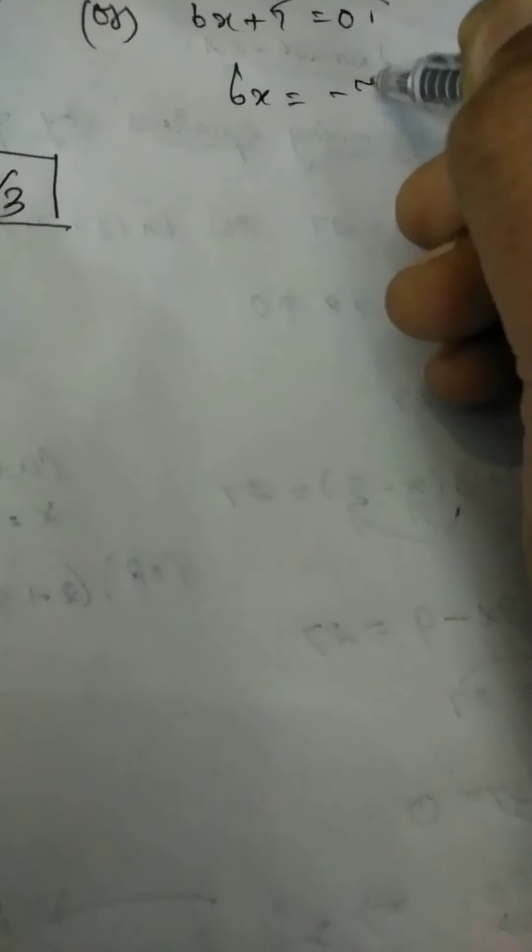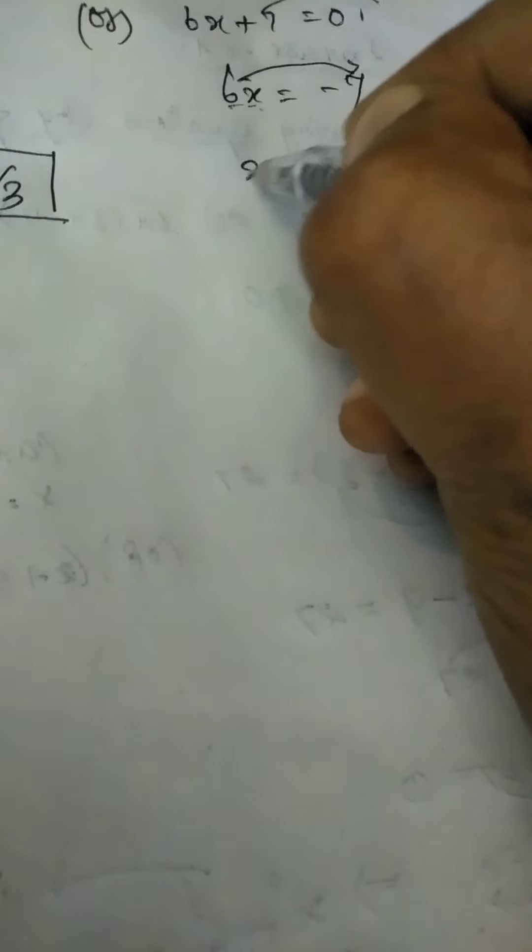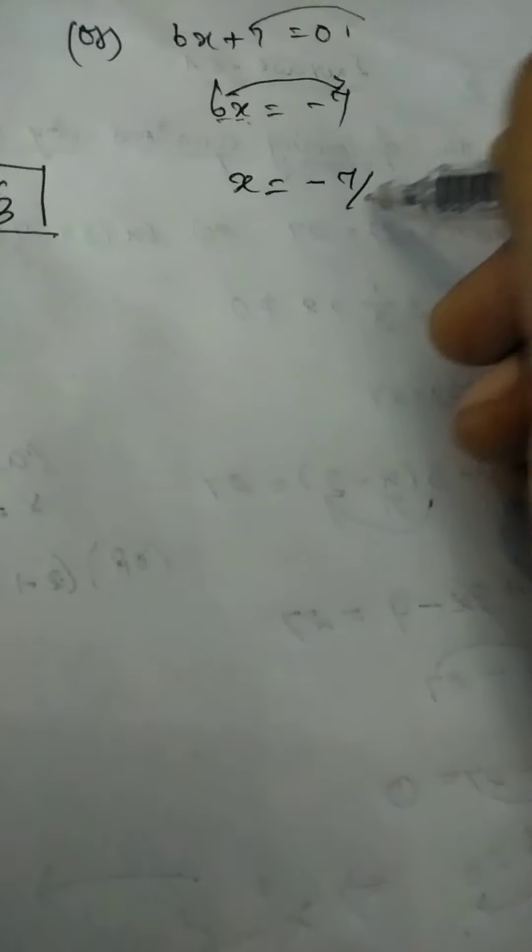So 7 divided by 3. This is one root. Another root here you have to transpose 7 next side. So 6x is equal to minus 7. Then you transpose 6 next side.